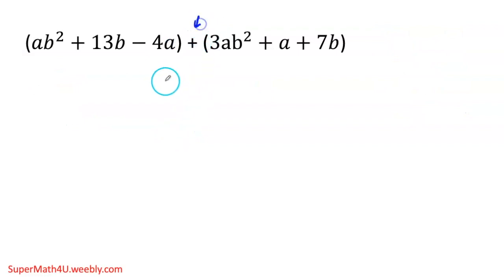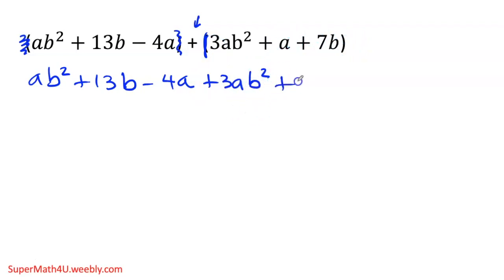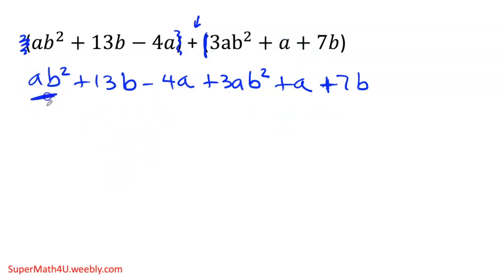Next one. Again, there's a plus in between, so I'm adding. I check outside the parentheses — there's nothing — so I can get rid of those parentheses. I have ab² plus 13b minus 4a. Outside the second parentheses there's a plus, and as we noticed, it's not going to change anything on the inside. So 3ab stays positive, the a stays, and 7b stays positive. There's nothing in front of the first ab² term, so you have a positive 1.